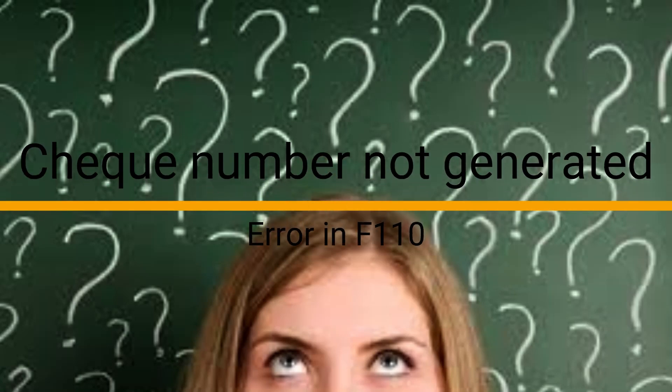You can ask questions from past classes, then we'll start today's topic. A student explains: when running the APP check program, the check number is not appearing in the payment advice. Also, in the last three steps — check register, payment advice, and spool request — the check lines are missing and it's unclear why.